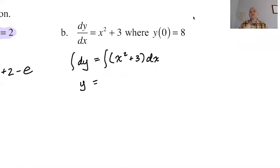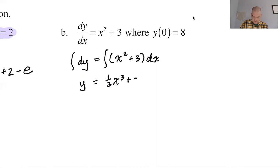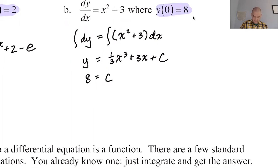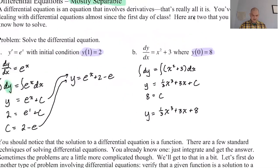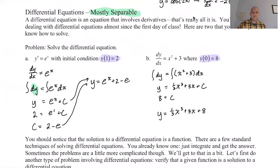We throw in integral signs. On the left-hand side we're integrating dy, so we get back y — the derivative of y with respect to y is 1, so we integrate 1 dy and get y. We save the plus C and put it on the side with the x's. So we get one-third x cubed plus 3x plus C. We use the initial condition to solve for C, and in this case C is 8, giving a final answer of one-third x cubed plus 3x plus 8.